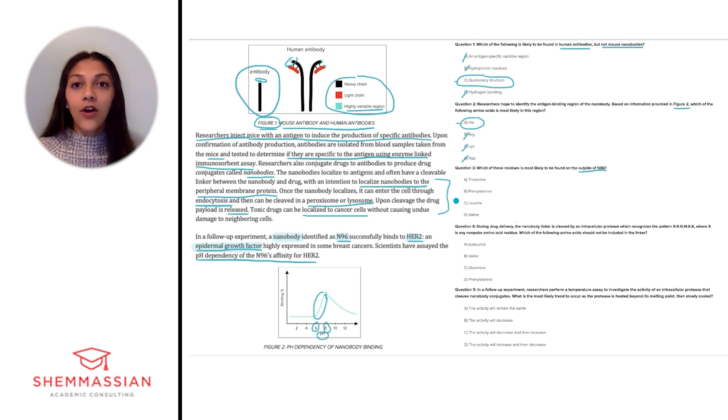Phenylalanine, leucine, and valine are all non-polar amino acids, which are much more frequently found on the interior of proteins. In comparison, threonine is a polar residue with a hydroxyl group, so it's more likely to be found on the outside of N96.